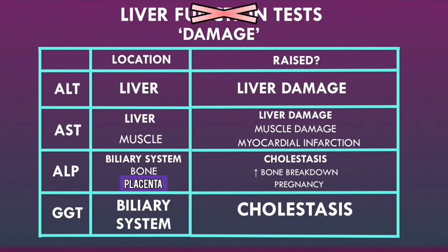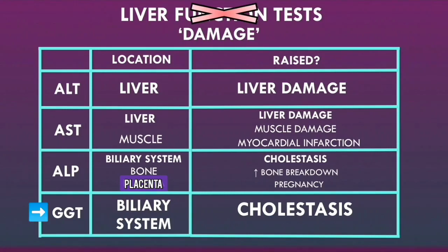Even though ALT and AST are not located within the biliary system, cholestasis can eventually lead to liver damage, so ALP and GGT will increase initially, but over time the cholestasis can raise ALT and AST as well. An isolated increase in GGT could suggest recent alcohol use.